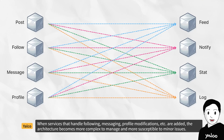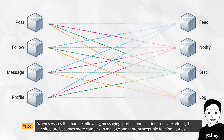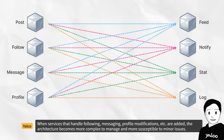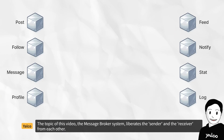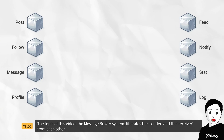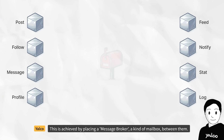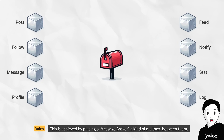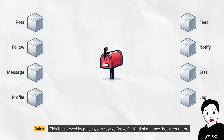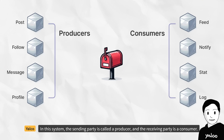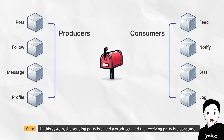The architecture becomes more complex to manage and more susceptible to minor issues. The topic of this video, the message broker system, liberates the sender and the receiver from each other. This is achieved by placing a message broker — a kind of mailbox — between them. In this system, the sending party is called a producer and the receiving party is a consumer.